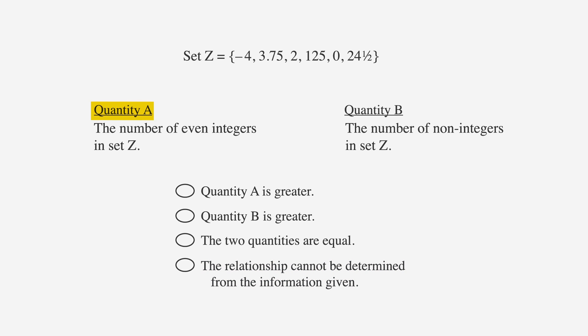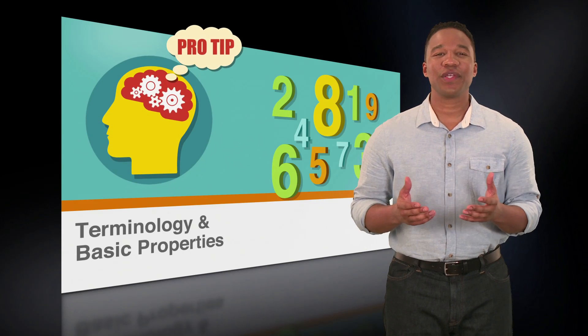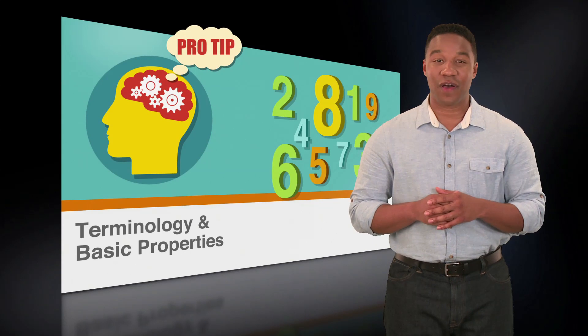Okay, first we'll analyze quantity A. Let's look at the even integers in set Z: negative 4, 2, and 0. I've got a pro tip for you. Here's where you need to read the question carefully to understand what you're solving.